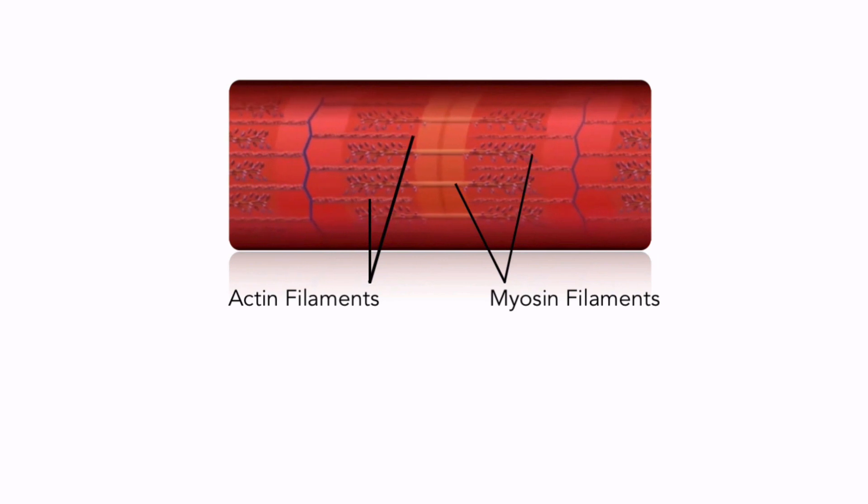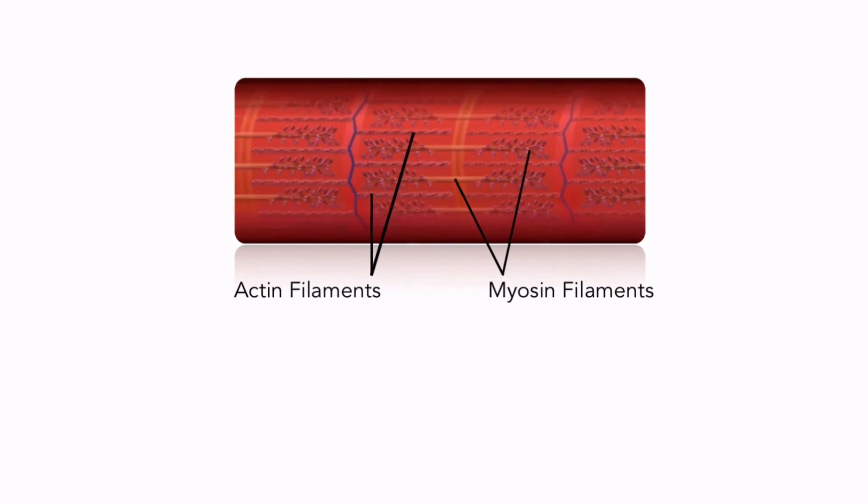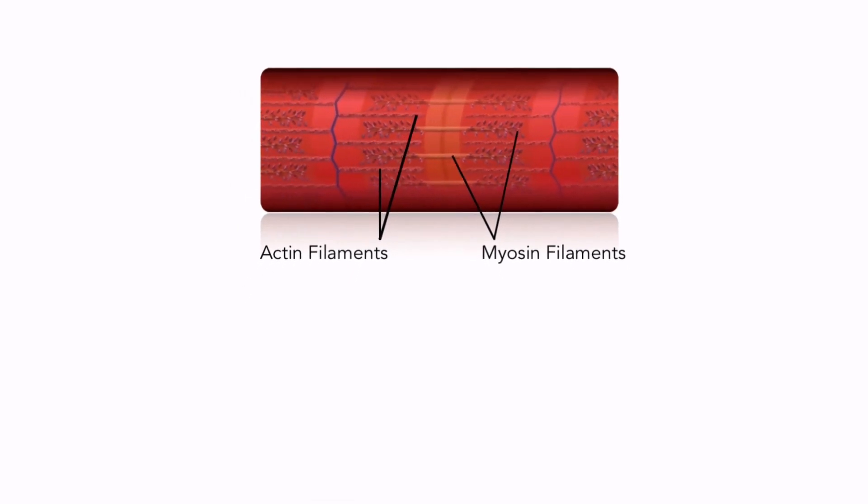Muscle tissue is specialized for contraction. Muscle cells contract due to interaction between filaments of the proteins myosin and actin. These two proteins are found in the cytoskeletons of many cells, but in muscle cells the filaments are more numerous and arranged so that their interaction produces a contraction of the entire cell.